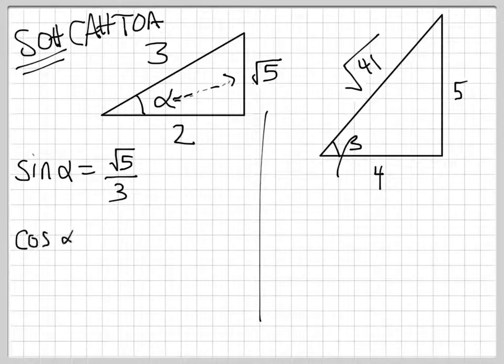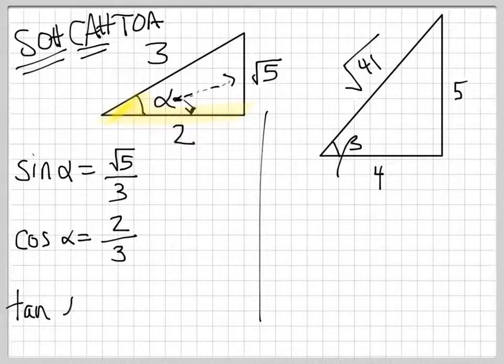Cosine of alpha is adjacent over hypotenuse. So adjacent is below the angle there. It's touching it. See how this side here actually touches the angle? So the adjacent side has length 2, and the hypotenuse has length 3. Tangent of alpha is opposite over adjacent, so we take radical 5 and divide it by 2.